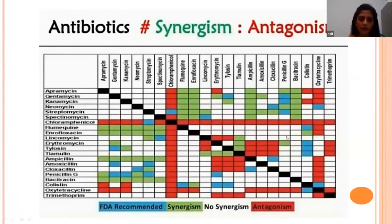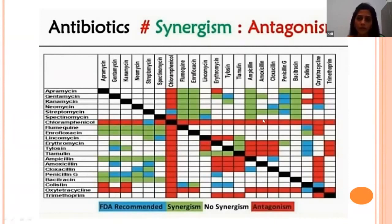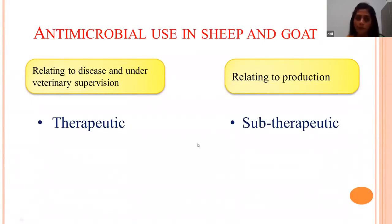This table shows synergistic and antagonistic antibiotic interactions. Synergistic activity (shown in green) means combining two antimicrobial drugs produces a net effect greater than either drug alone. Antagonism (shown in red) means the combined effect is less than individual drug activity. An important rule: bactericidal drugs should only be combined with bactericidal drugs, and bacteriostatic with bacteriostatic. Mixing bactericidal with bacteriostatic produces an antagonistic effect.